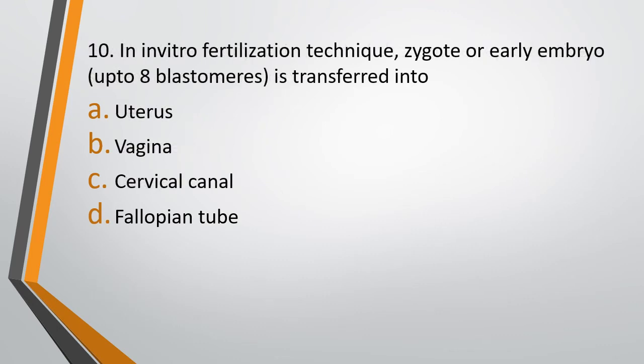Question 10. In vitro fertilization technique results in the formation of a zygote or early embryo. Where is this transferred to? In the IVF technique, a zygote or early embryo up to 8 blastomeres is transferred — Option A: Uterus. Option B: Vagina. Option C: Cervical canal. Option D: Fallopian tube. The correct answer is Option D — up to 8 blastomeres is transferred to the fallopian tube.